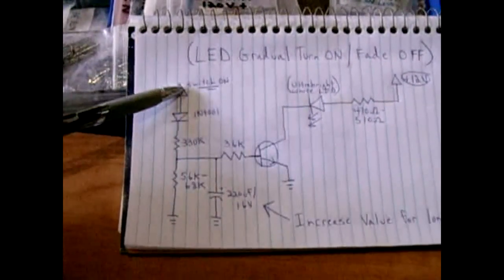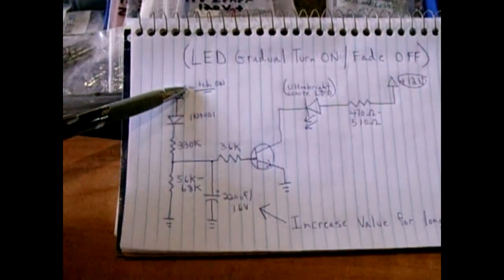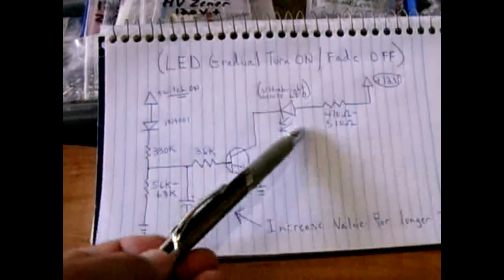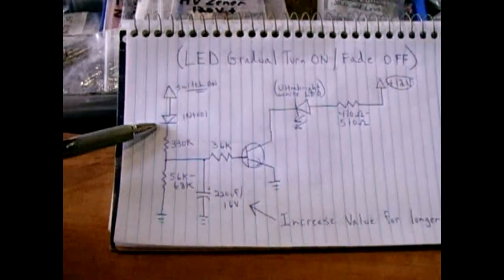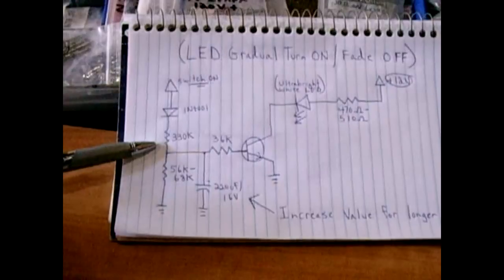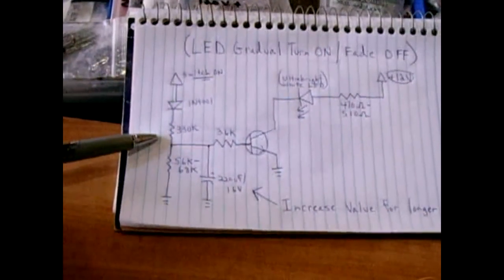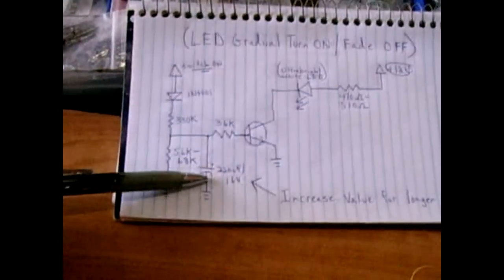So when you turn on the circuit, the switch power that would normally go to the light that you'd like to dim would flow into the diode. Power then slowly bleeds through the 330k to charge up this capacitor.